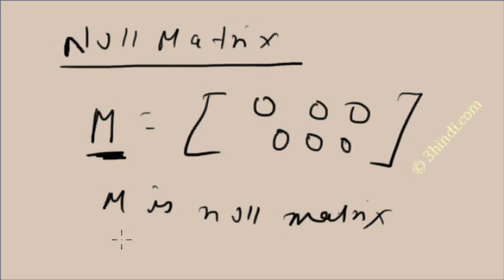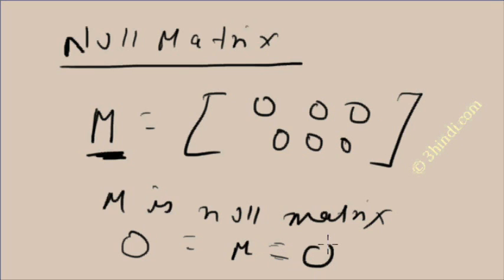You cannot say M is 0, but you can only say in this condition that M is a NULL MATRIX. Any NULL MATRIX is denoted by 0. So M is 0. This is a matrix which has all element values equal to 0. This is called NULL MATRIX.